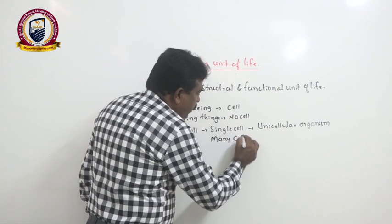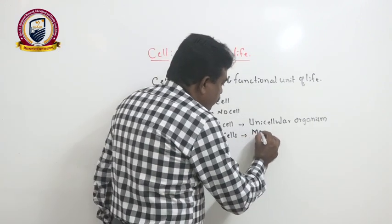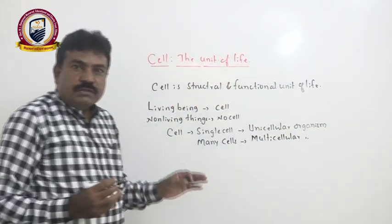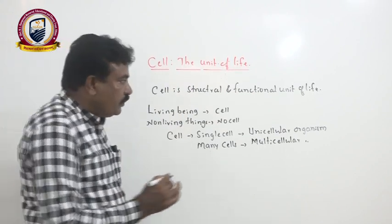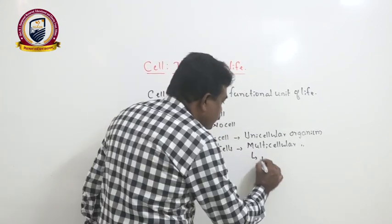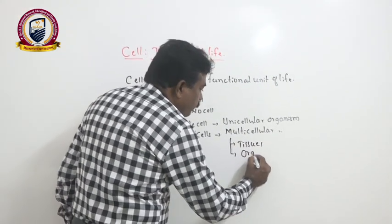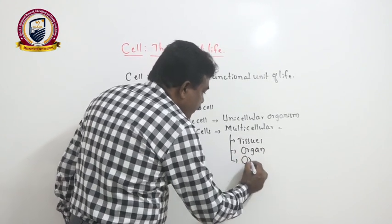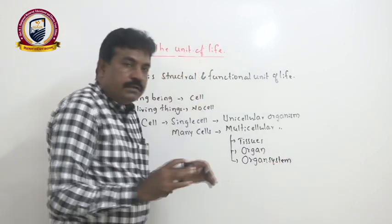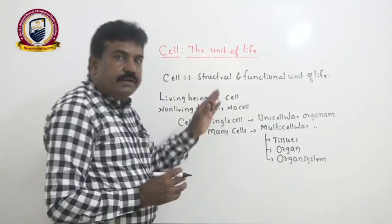There may be organisms whose body is composed of many cells — these are called multicellular organisms. In multicellular organisms, cell is still the basic functional unit. Groups of similar cells form tissues; different tissues together form organs; different organs together form an organ system. But the basic structural and functional unit of the organism is the cell itself.